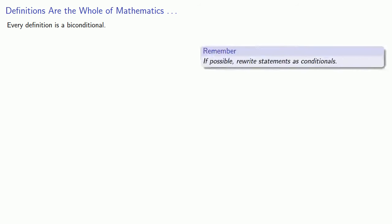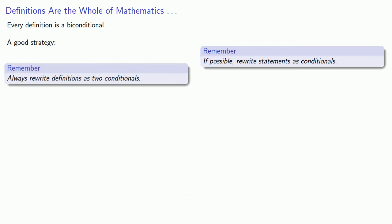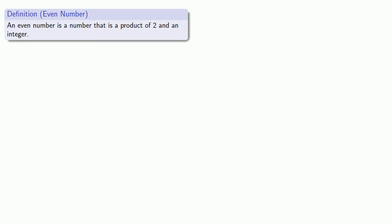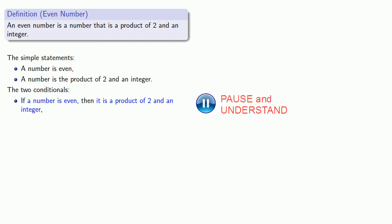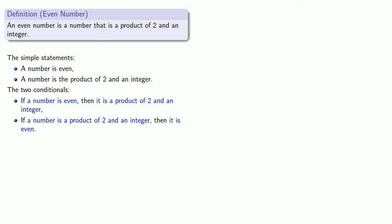One of the most important occurrences of conditionals: every definition is a biconditional. This leads to a very good strategy for mathematical proof — always rewrite definitions as two conditionals. For example, define an even number as a number that is a product of two and an integer. Our simple statements: 'a number is even' and 'a number is the product of two and an integer.' Since it's a definition, it's a biconditional, giving us: if a number is even, then it is the product of two and an integer; and if a number is the product of two and an integer, then it is even.